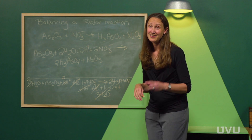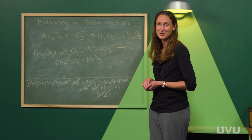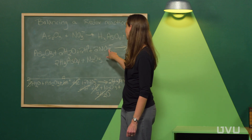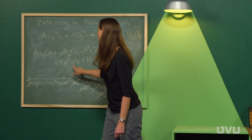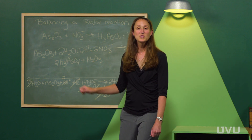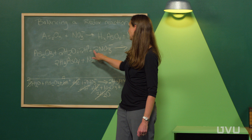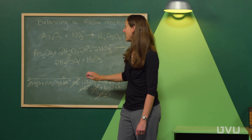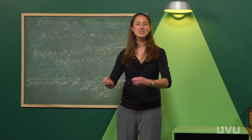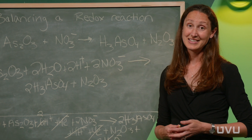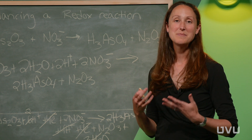A final step often forgotten is to double-check your answer. Verify each element: two arsenic on both sides, eleven oxygens on both sides. Then verify charge: on the reactant side, two positive protons and two negative nitrates give an overall neutral charge, matching the neutral products. Confirming both elemental and charge balance proves this is a correctly balanced redox reaction.